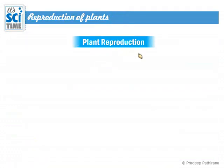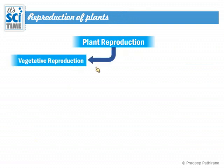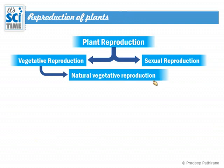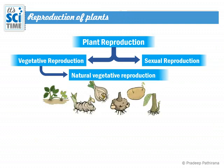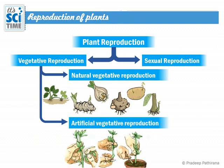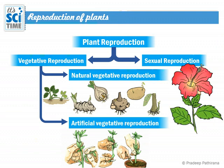This is a recap from the last lesson. Plant reproduction is of two types: vegetative reproduction and sexual reproduction. Vegetative reproduction occurs in two ways — natural vegetative reproduction through rhizomes, corms, bulbs, stem tubers, and artificial vegetative reproduction through methods like stem cuttings, layering, budding, and tissue culture. Today's lesson is sexual reproduction.